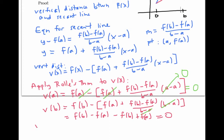Since v(a) equals v(b), by Rolle's theorem, v'(c) equals zero for some c in the interval [a,b].